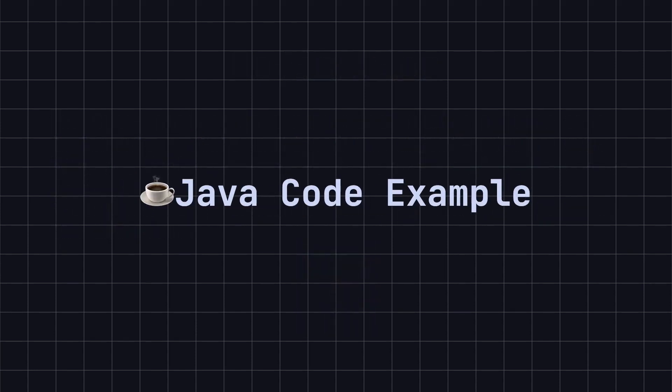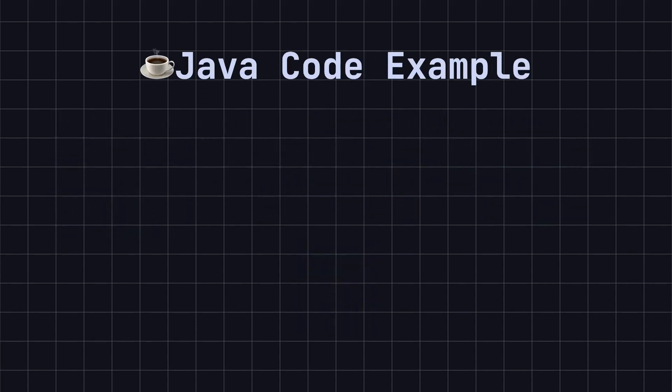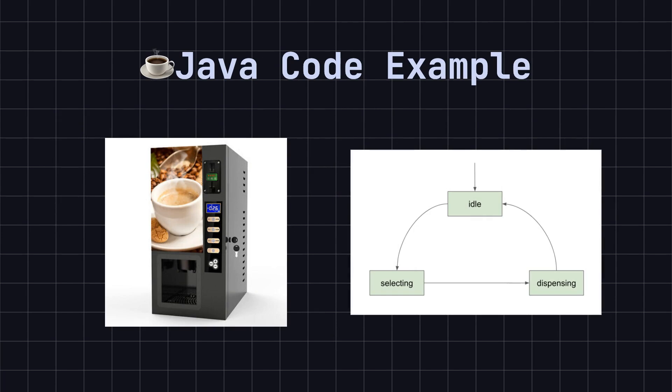To better understand this pattern, let's use an automatic coffee machine as an example and implement the state pattern in Java. In this example, the coffee machine's behavior changes based on its current state, which includes idle, selecting coffee, and dispensing coffee. Note that this is a simplified example, and an actual coffee machine would have more complex states.